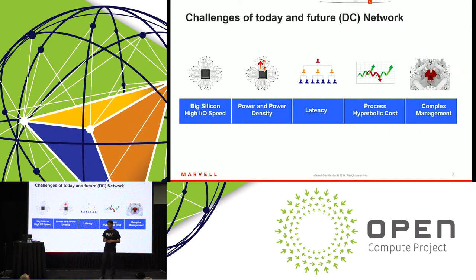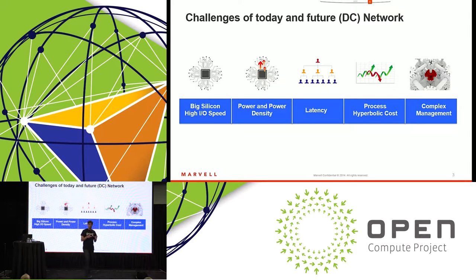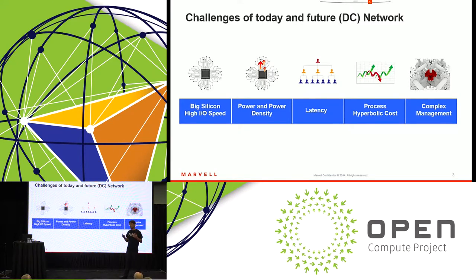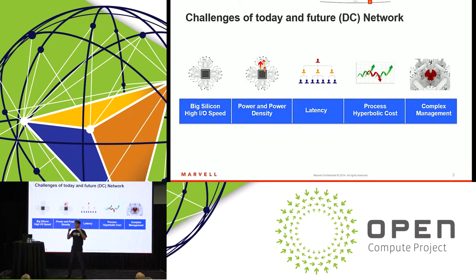The other problem is that as we go forward, the silicon consumes more power in a more dense area, so there is a cooling problem in the boxes. The third problem is that as the data center supports more and more servers, the number of hierarchies in the data center becomes larger and larger, and the latency for north-south and east-west traffic becomes higher.